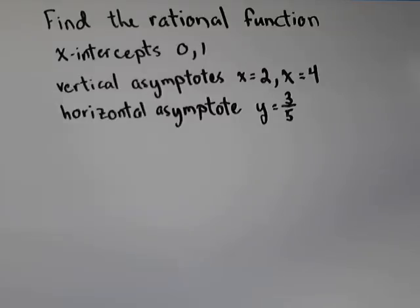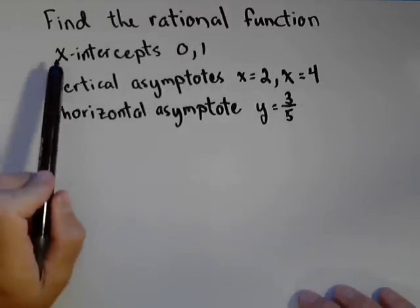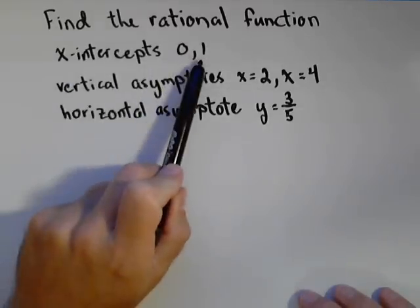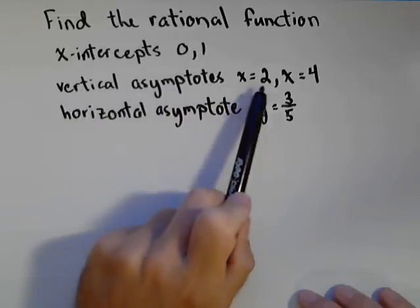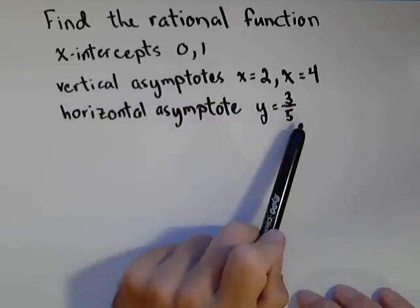So in this video, we want to find the rational function with the following attributes: x-intercepts at zero and one, vertical asymptotes at x equals two and x equals four, and a horizontal asymptote at y equals three-fifths.